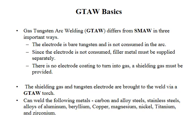Gas tungsten arc welding, also known as TIG welding, differs from shielded metal arc welding in three important ways. The tungsten electrode is not consumed in the arc. Since it is not consumed, the filler metal must be supplied separately. And finally, since there is no electrode coating to turn into gas, a shielding gas must be provided. The shielding gas and tungsten electrode are brought to the weld via a GTAW torch.